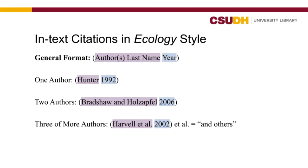Regardless of style, there are two main components of a citation. First, when you reference another source, include an in-text citation in the body of your paper. In Ecology style, this citation typically includes the author's last name and the year in parentheses.